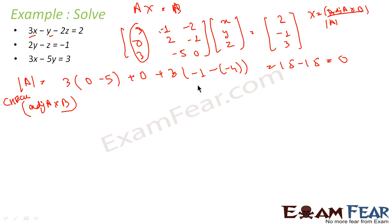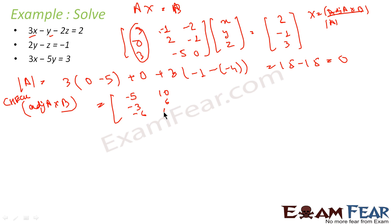I am not finding the adjoint of A step-by-step here — you can find it using the slides or videos before this. Let me just write the value of adjoint of A, and then we multiply adjoint(A) · B.